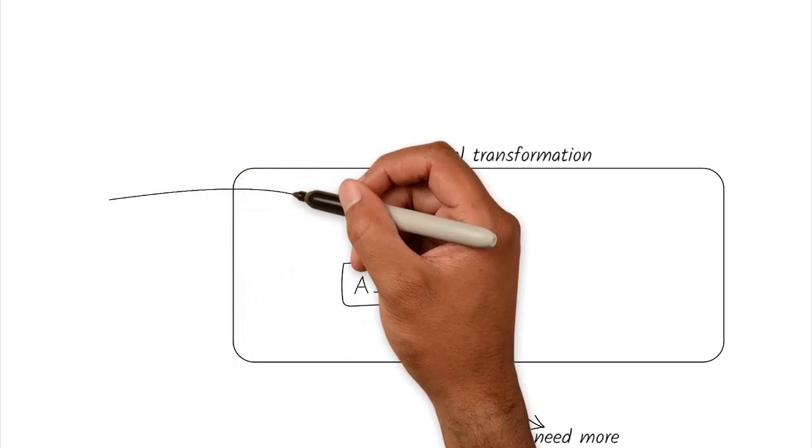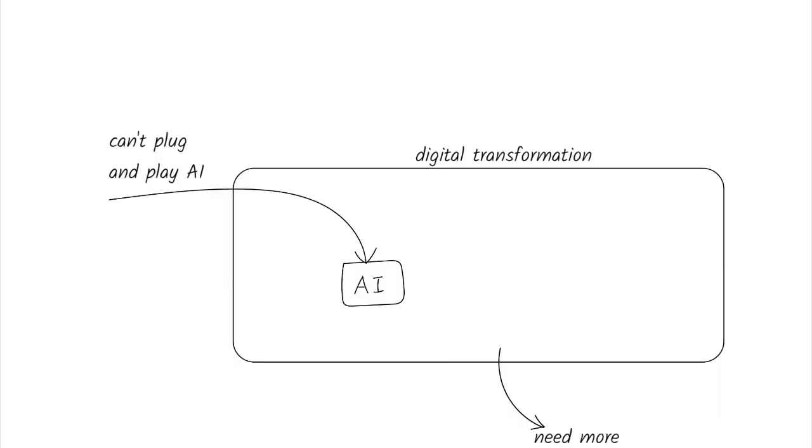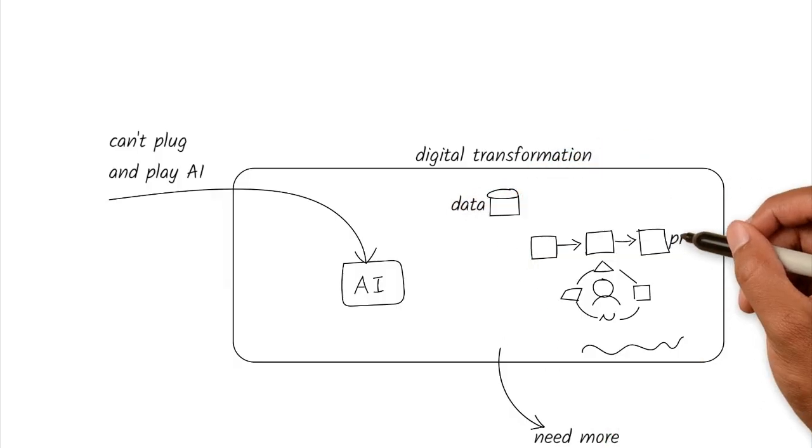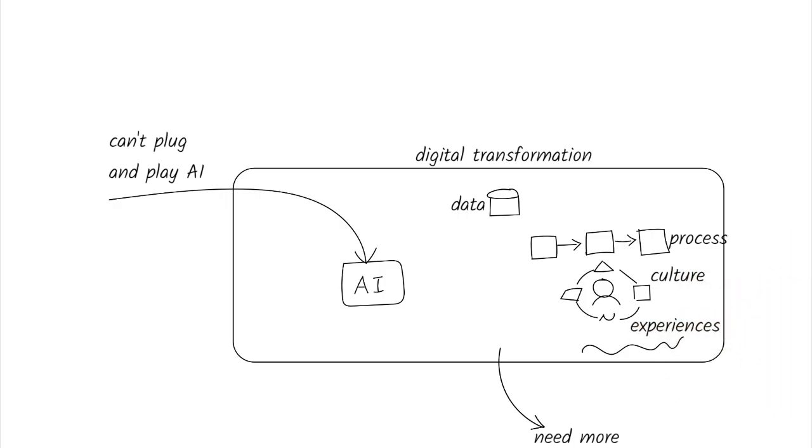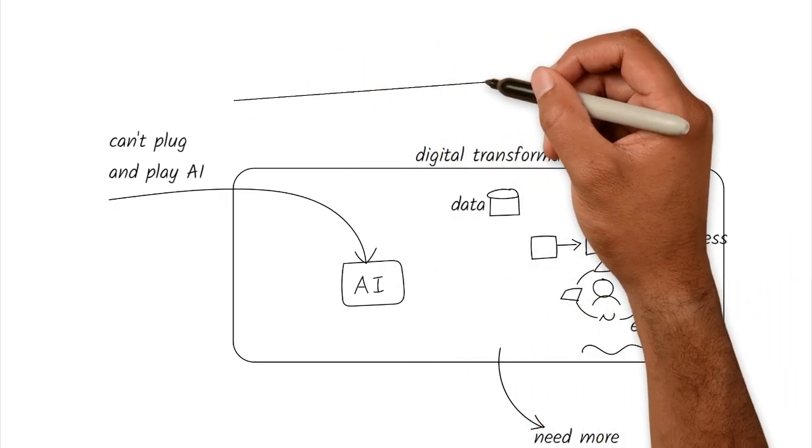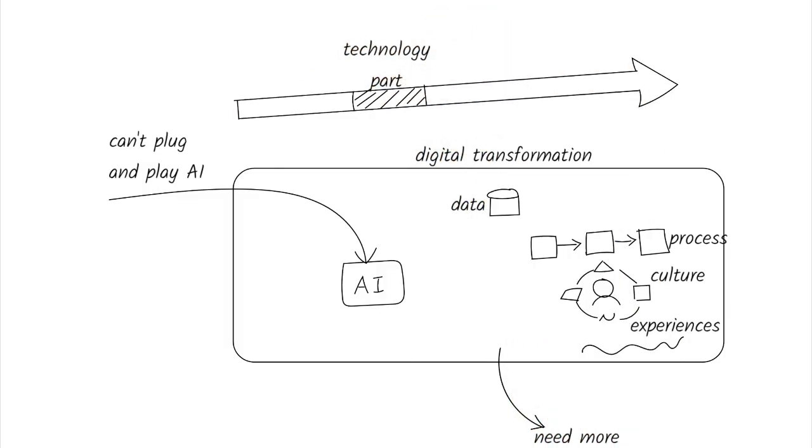So when organizations bring in AI, they can't treat it as a plug-and-play fix. It needs to fit into the broader organizational system: data, processes, culture, and customer experience. In fact, the technology itself is often the smallest part of the transformation puzzle.